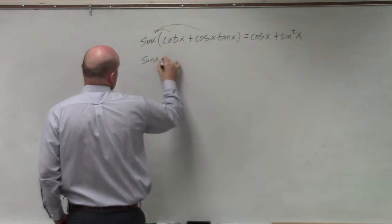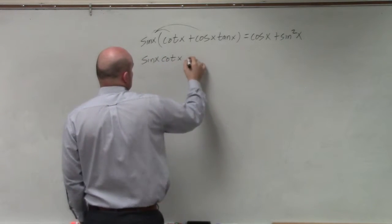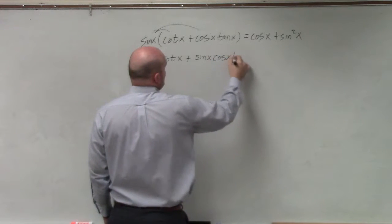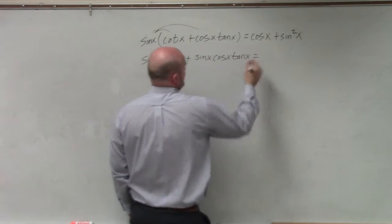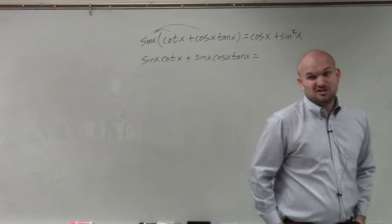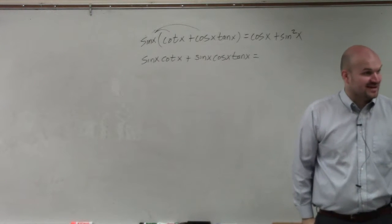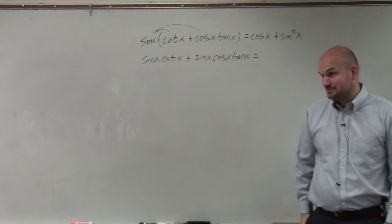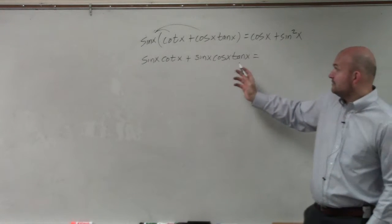I'm just going to multiply my terms: sine of X times cosine of X plus sine of X times cosine of X times tangent of X. Doesn't look like the right side though, does it? Right now I don't really see anything that I can simplify.